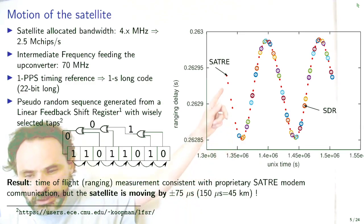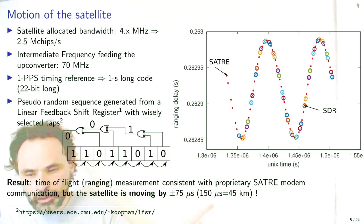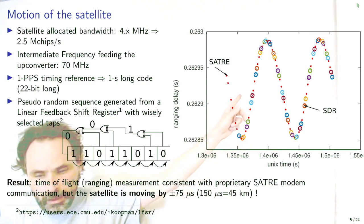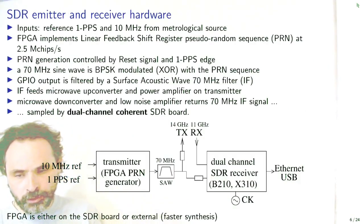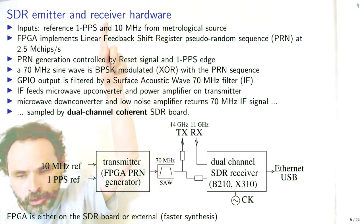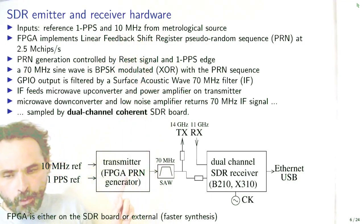We will generate the 70 MHz intermediate frequency from the FPGA, as well as the pseudorandom sequence resulting from a linear feedback shift register whose taps match the maximum length sequence of the Galois field code. Here is an example of a measurement, a ranging measurement, in which we compare the SATRE modem from TimeTech with our SDR implementation of a one second long code, one second being selected to avoid any uncertainty on the time of flight and a pulse repetition interval longer than the time of flight.